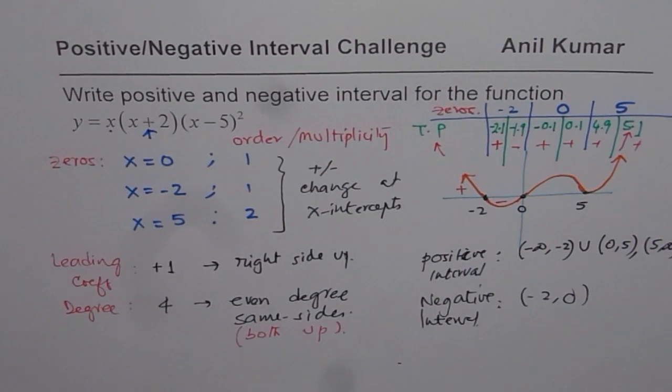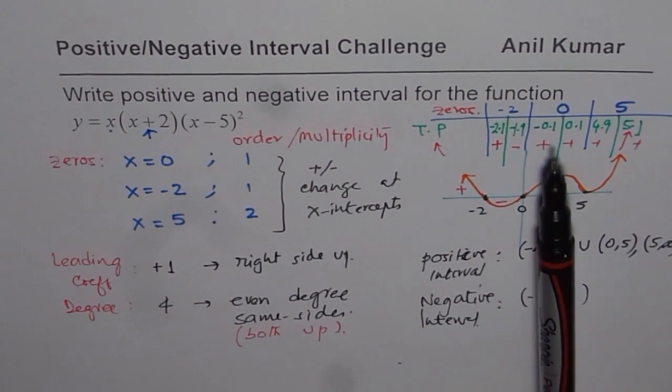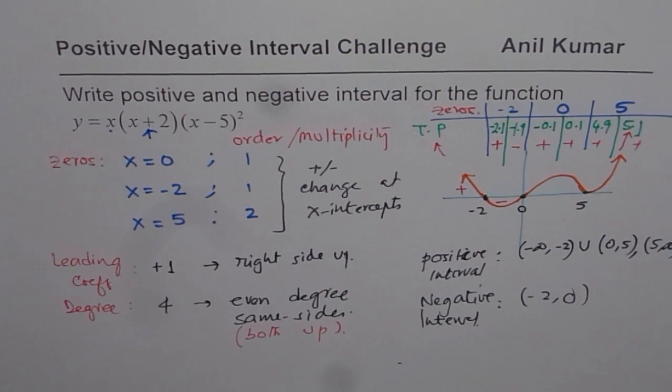So 2 approaches which we are discussing here are: 1, you could either graph, 2nd, make table of values. With zeros as the cutoffs because it is only at zeros or the x-intercepts that the value changes from positive to negative or from negative to positive. I hope you appreciate it. I'm Anil Kumar. You can subscribe and share my videos. Thank you and all the best.